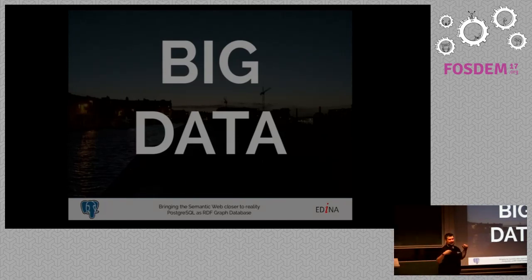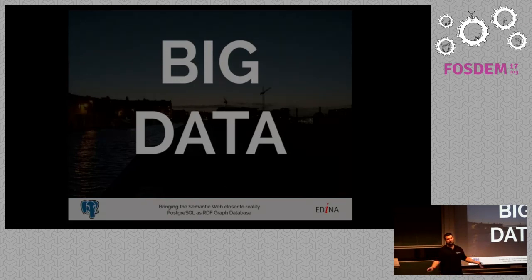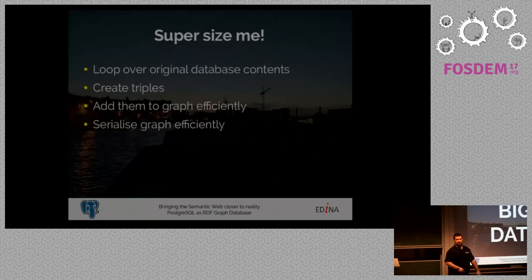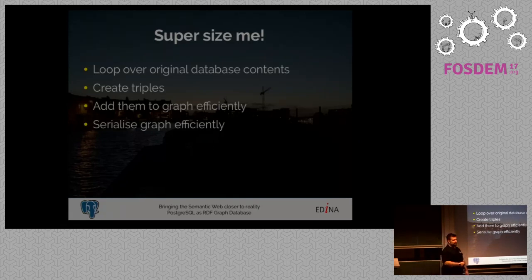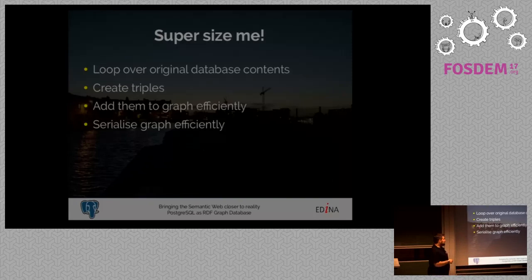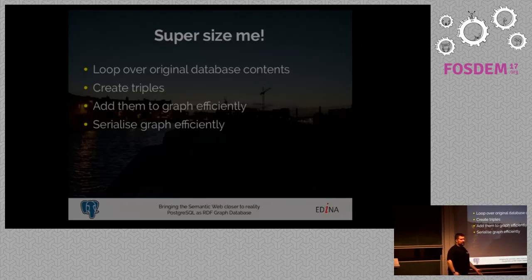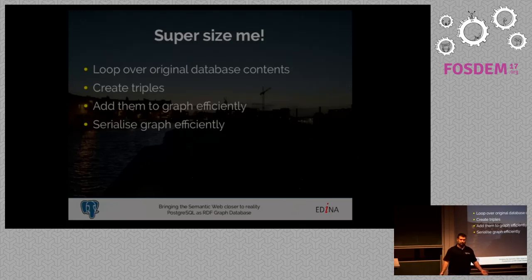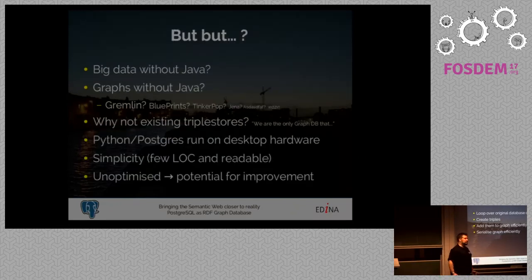Here comes the big moment — we've only created two triples. How does this thing scale? Big data is just taking the same principles you applied to your 10 or 10,000 records and making them scale to 10 billion records. So, how do you supersize this? You have to loop over the original database contents in our JSONB table, create triples in RDFLib and Python, find an efficient way to add them to the graph, and find a way to serialize the graph efficiently — do you create the whole thing in memory? Do you have three terabytes of memory? Probably not.